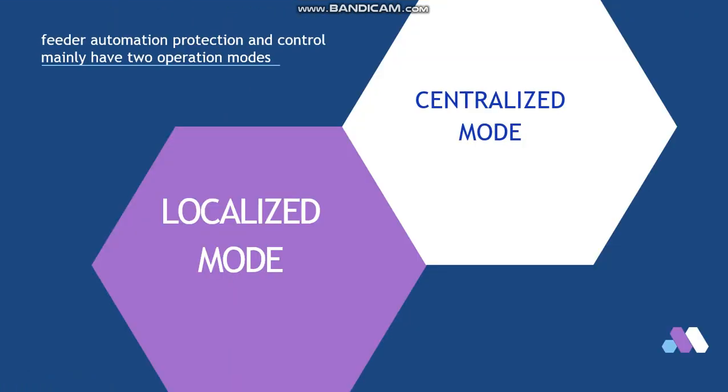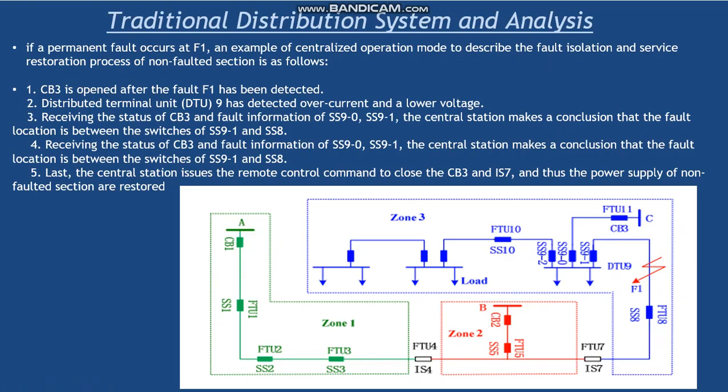For feeder automation protection there will be two modes: centralized mode and localized mode. You can see that for example if a permanent fault occurred at F1, which is an example of a centralized operation mode, in order to restore power at the non-faulted section following methods.